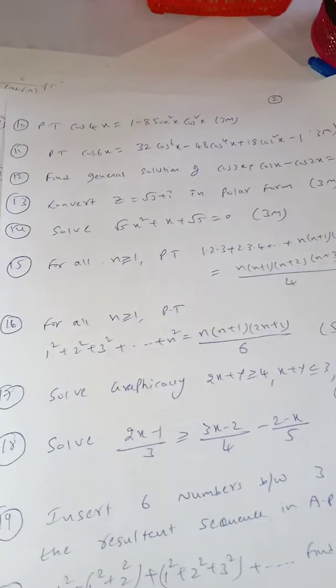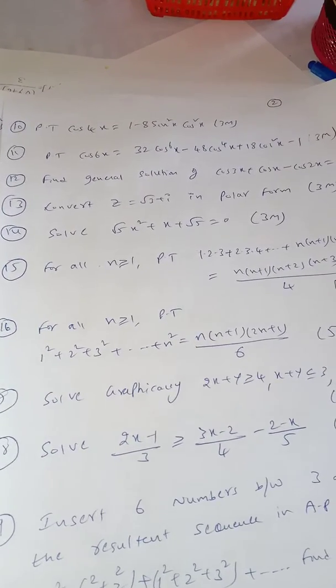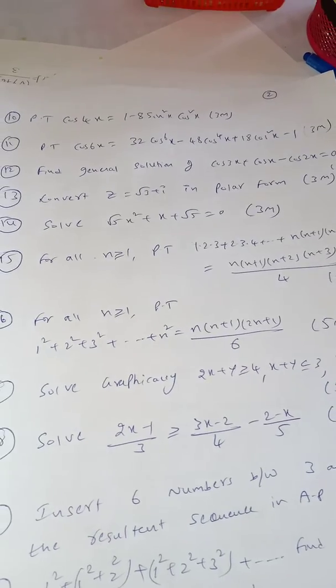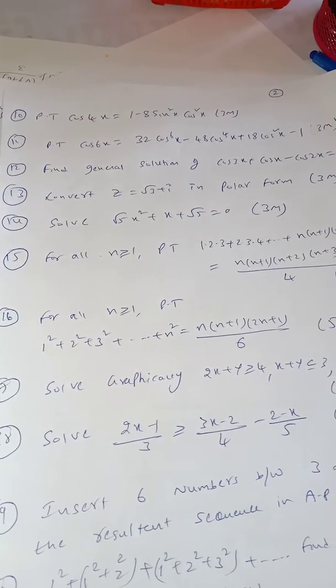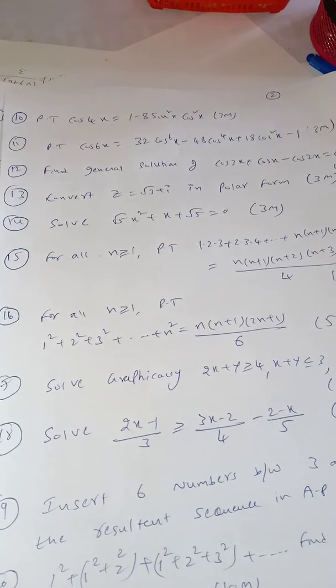Question number 13, convert z is equal to root 3 plus i in polar form. It is also a 3 mark question. Solve root 5 x square plus x plus root 5 equal to 0. It is a quadratic equation question, also 3 marks.